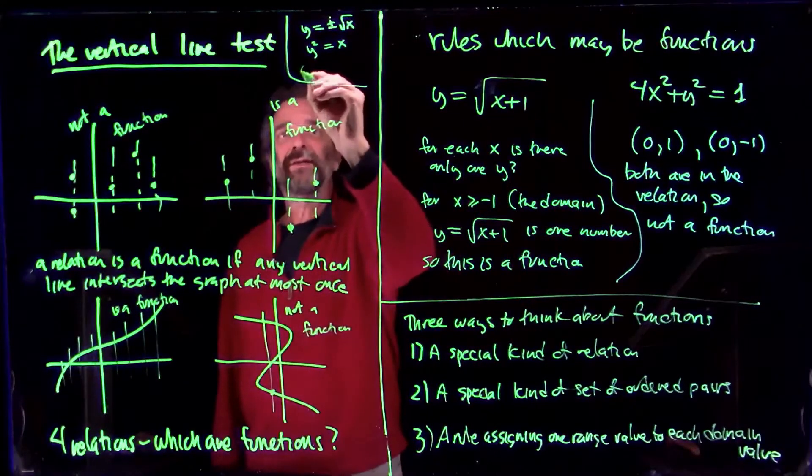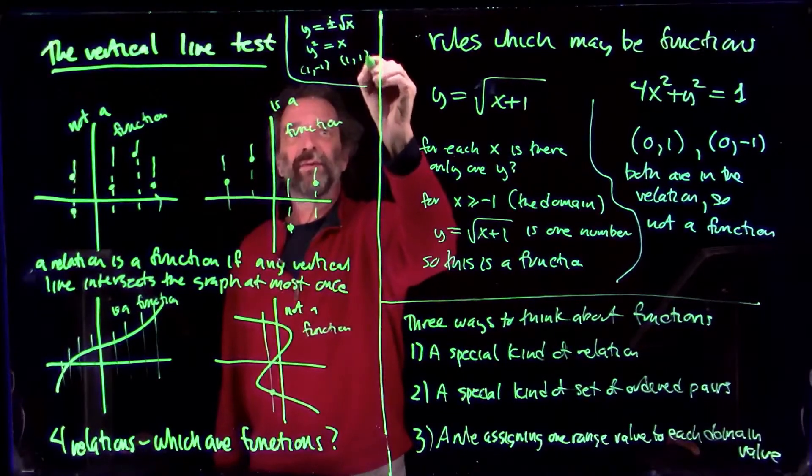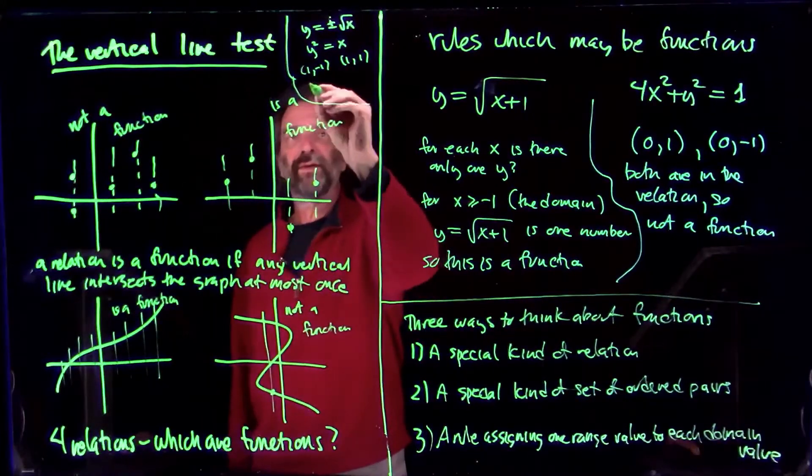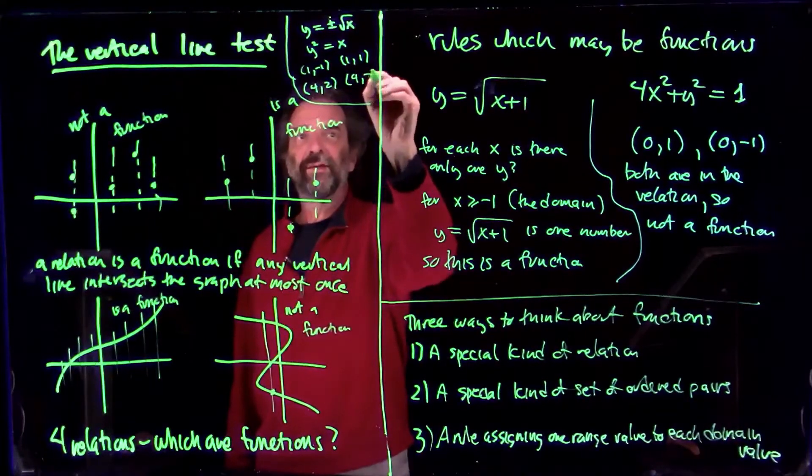Then you could see that x is 1, y is minus 1, x is 1, y is 1. Both work. Oh, it's sort of like a square root, though, right? Y squared is x. So if x is 4, y is 2. If x is 4, y is minus 2.